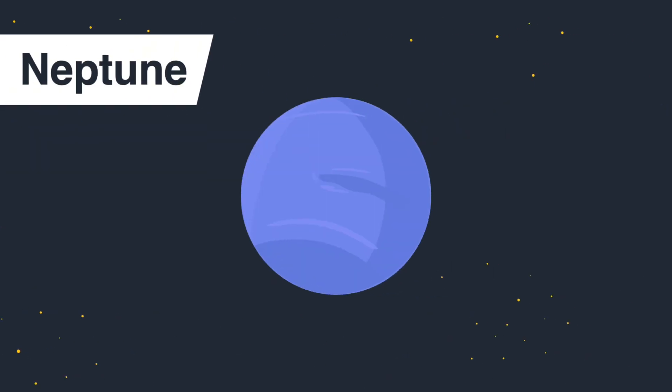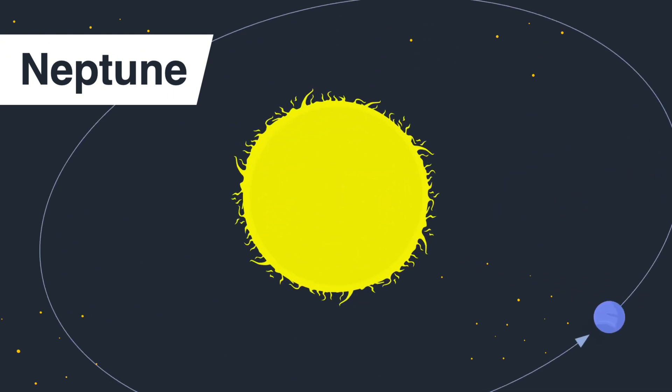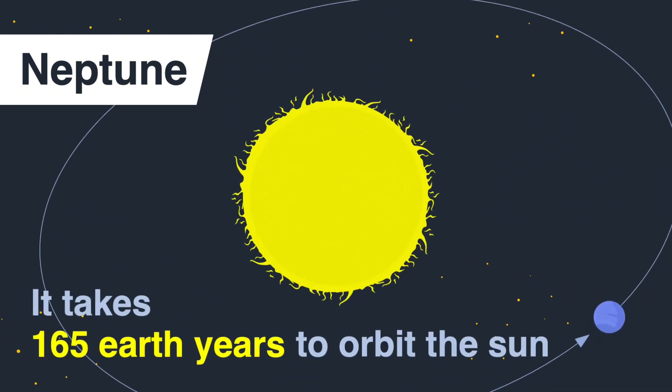Neptune. Farthest from the sun, Neptune is a very cold and windy planet. Its supersonic winds, reaching over 2000 kilometers per hour, are the fastest in the entire solar system. Like Uranus, its blue color arises from atmospheric methane, but Neptune appears way darker. It takes 165 Earth years for the icy planet to orbit the sun.